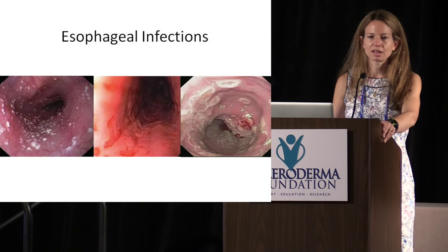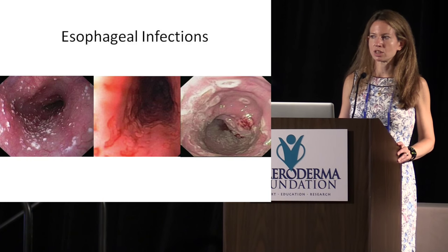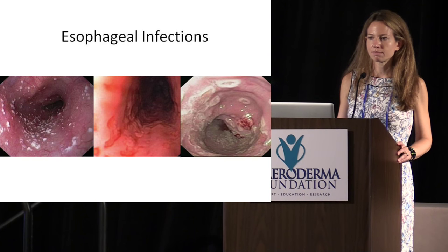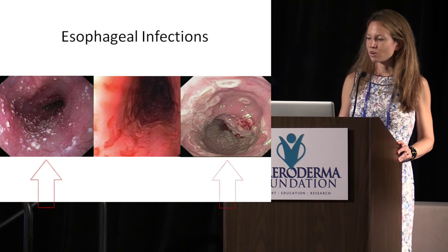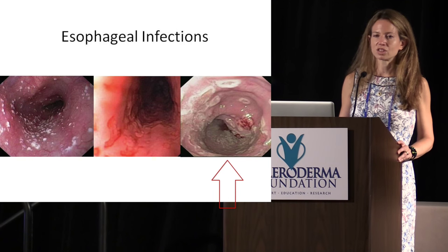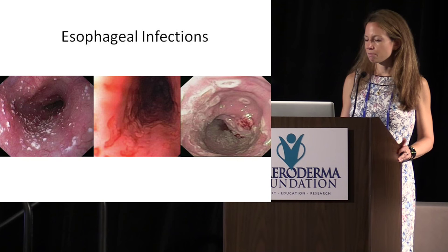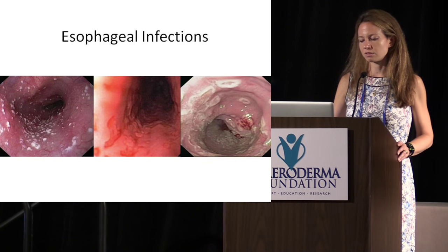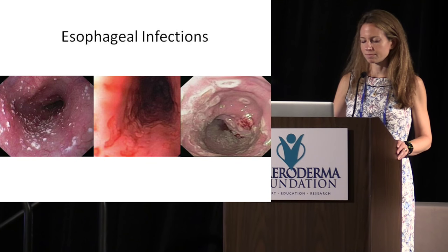Esophageal infection is something we also sometimes see. When I see esophageal infections in my scleroderma patients, it's usually somebody on higher-dose immunosuppression. They can get either yeast — this is a picture of Candida or a yeast infection in the esophagus — or viral esophagitis. We can make these diagnoses on endoscopy. These are very painful but can be treated, and they are treated differently — not just a proton pump inhibitor, but specific antifungals or antivirals.